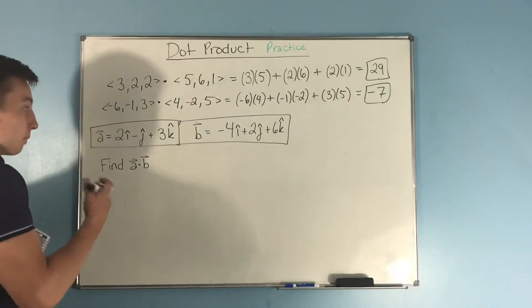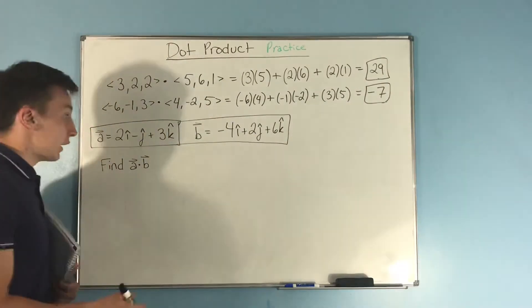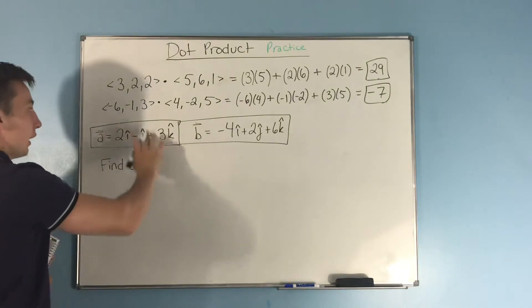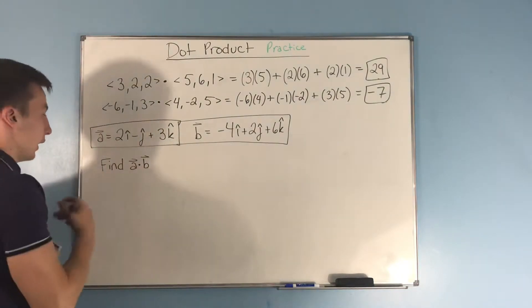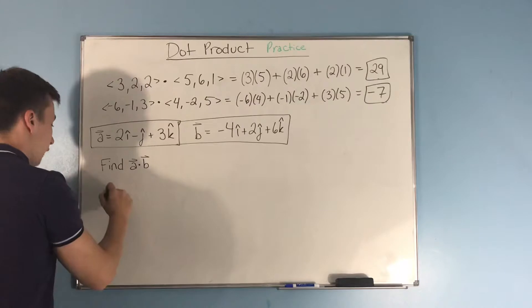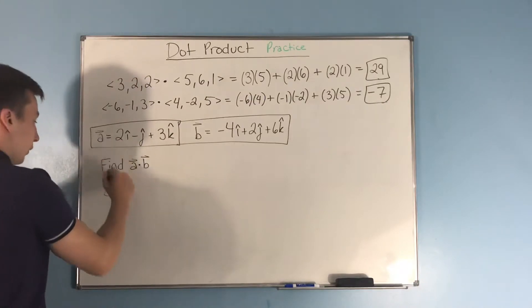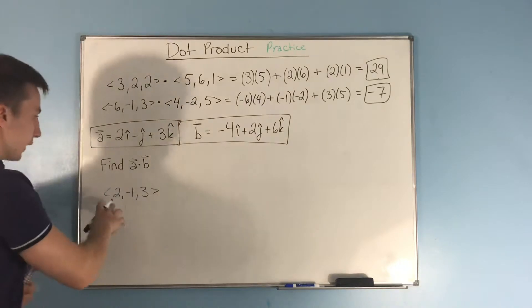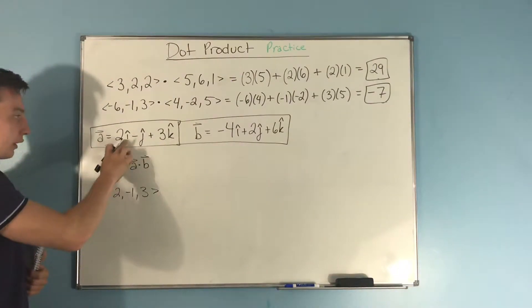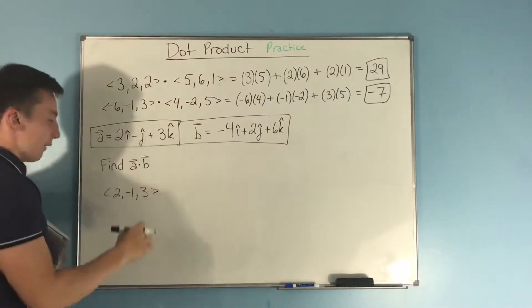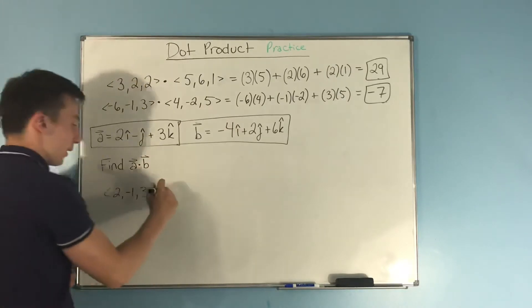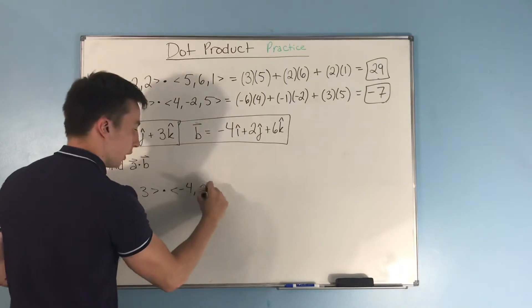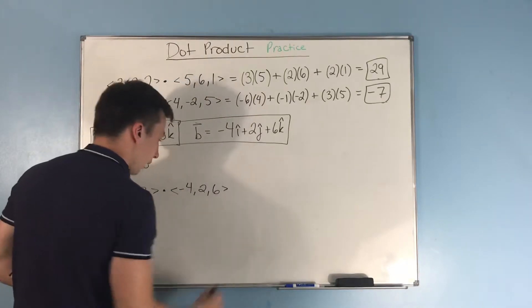So, now, what you can do here is you could just convert this with the unit vector notation into the angle bracket notation. So, we have our A is 2, negative 1, comma 3. Just the coefficients on i hat, j hat, and k hat. And that's going to be dotted with negative 4, comma 2, comma 6.